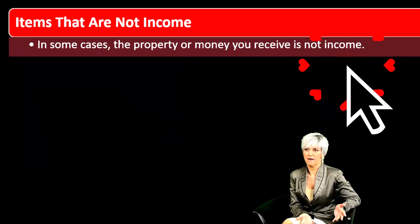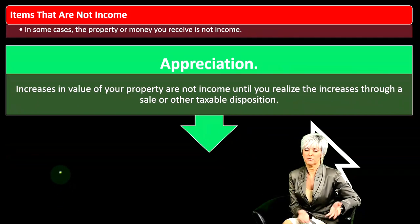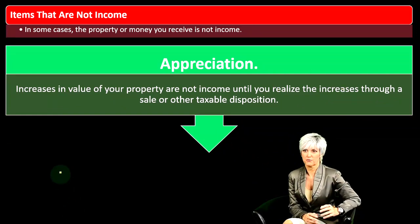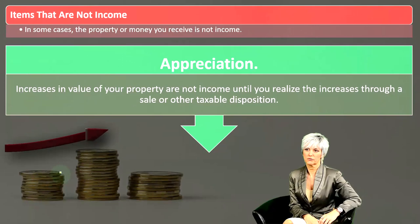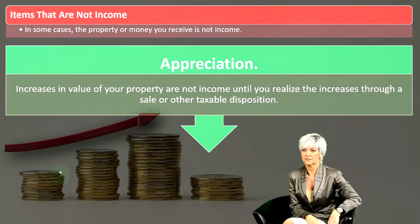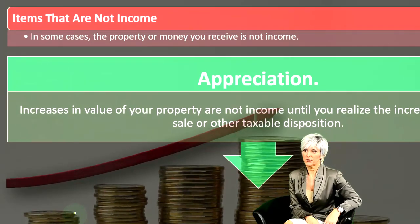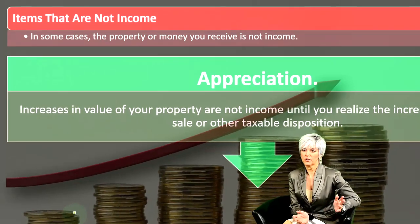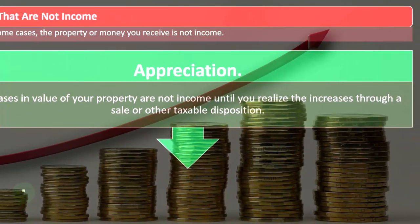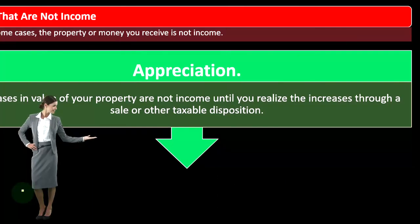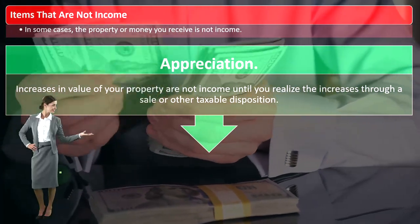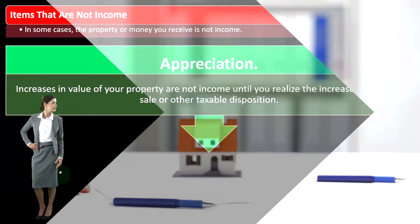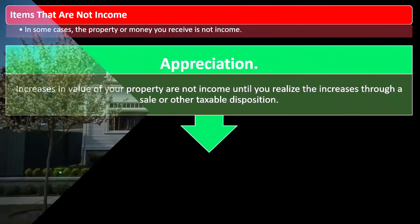Items that are not income: in some cases, the property or money you receive is not income. First, appreciation — increases in value of your property are not income until you realize the increases through a sale or other taxable disposition. When property value, for example real estate, goes up over time, that's different from most other business property like equipment. Equipment will generally go down in value; it will depreciate as there's wear and tear. Buildings and real estate could go up in value — the building still has wear and tear, of course, but the value of the property could go up.